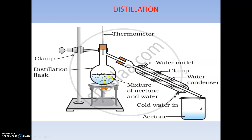You use a round-bottom flask, a condenser, and a water outlet so that water continuously flows into the condenser to cool it, converting vapors from the delivery tube back into liquid. You need a distillation flask, a clamp to hold the flask, a cork so vapors don't escape, and a thermometer. For example, if you take a salt solution — tap water is a mixture of dissolved salts — this can be purified by distillation.